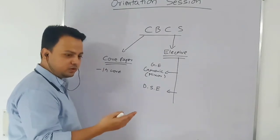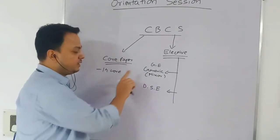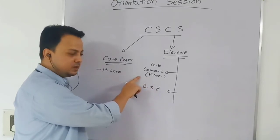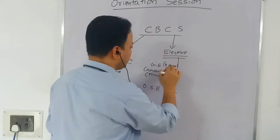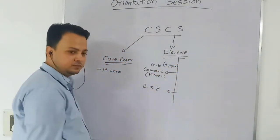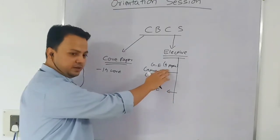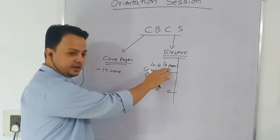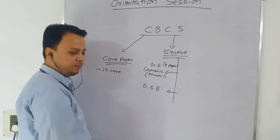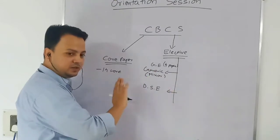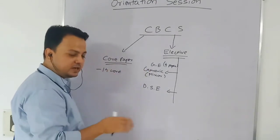In the generic paper you have to choose a subject other than economics that you are interested in — you can choose political science, history, mathematics, or statistics. Depending on your career choice, you can choose accordingly. We suggest that whatever generic paper you choose in the first semester, you choose the same subject in the second, third, and fourth semester. In the first two years you do four generic papers, and by doing the same subject throughout you earn a minor in that subject. You cannot choose economics in the generic elective paper.